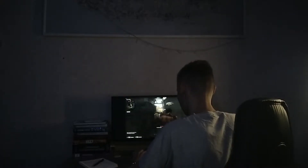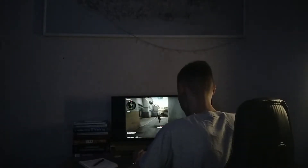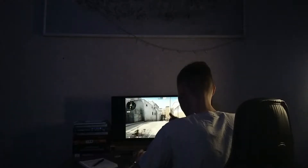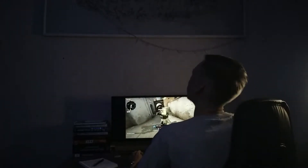Now let's compare the practical differences between these two technologies. For the setup I use the following scheme: the server is running on a desktop PC with Windows 10, connected through an Ethernet cable to the router. The client is running on a laptop with Arch Linux, connected over Wi-Fi 5GHz or over Ethernet. We will compare the performance of these two connections.